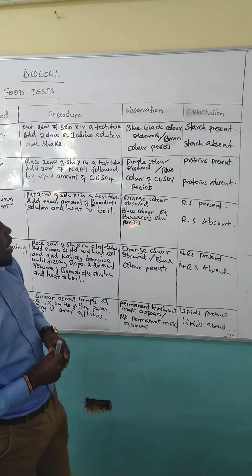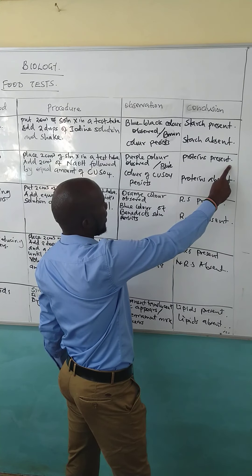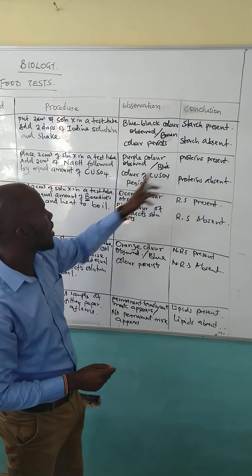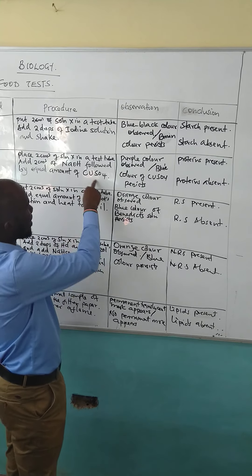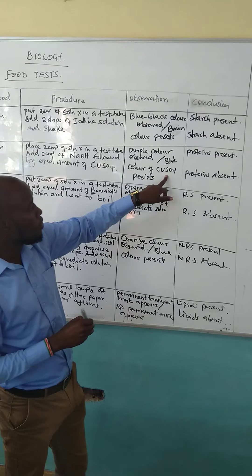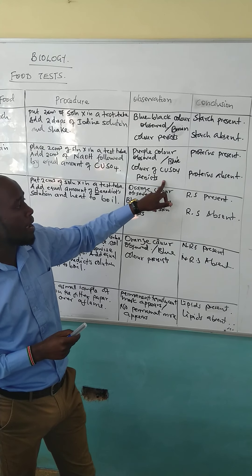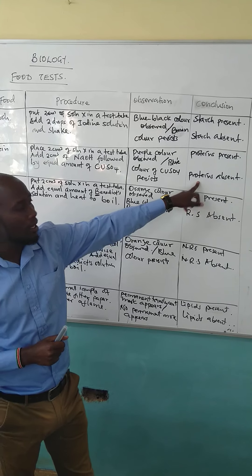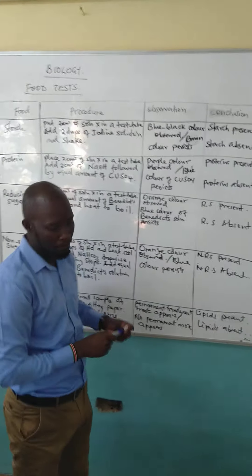When the purple color is observed, we conclude that proteins are present. But if the blue color of copper sulfate persists or remains, our conclusion becomes proteins absent.